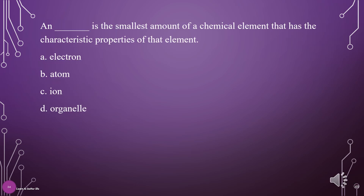What is the smallest amount of a chemical element that has the characteristic properties of that element? A. Electron, B. Atom, C. Ion, D. Organelle. The answer is B: Atom.